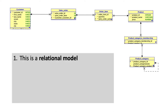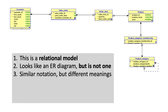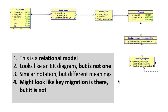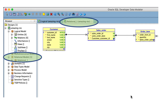Important point: this is a relational model, not a logical model, and the distinction is clear from the color. In a logical model, entity types have a different background color; this has a different background color. It looks like an ER diagram but it's not. Similar notation, different meanings — and it looks like there's key migration but it's not. There's nothing to freak out about. Ignore the notation on this diagram — this is called the relational model.